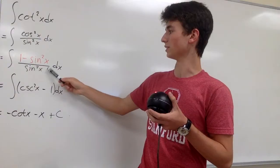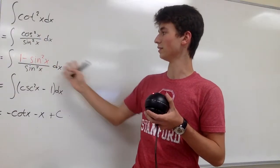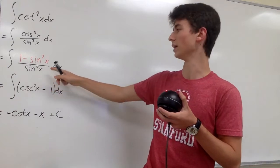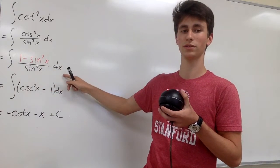And so we can rewrite the fraction like this, and then we can split the fraction into 1 over sine squared of x minus sine squared of x over sine squared of x.